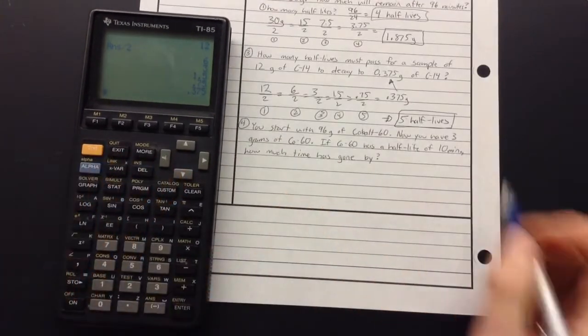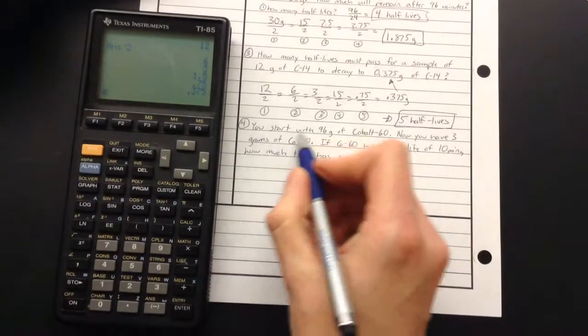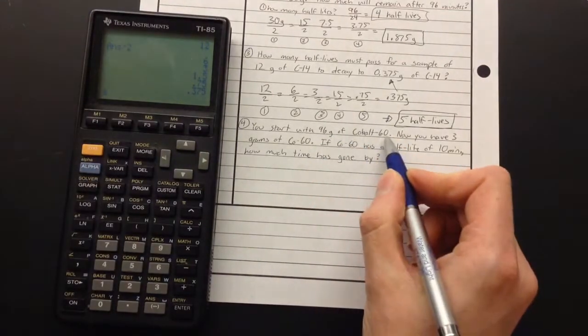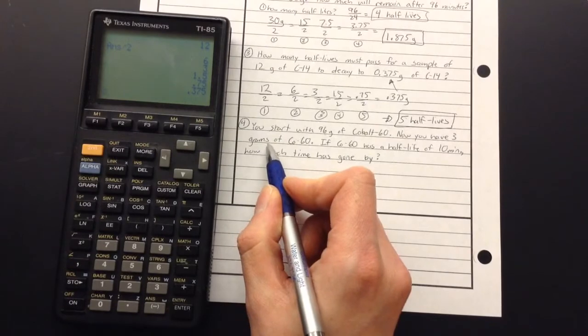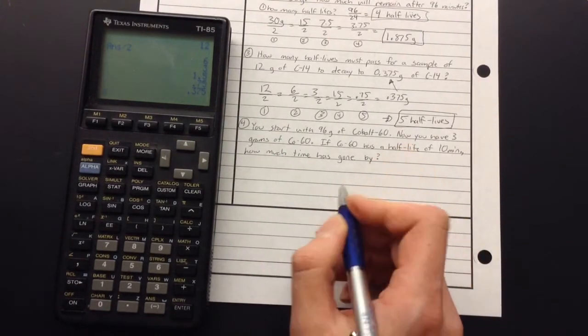All right, last one. So now, if I can figure out how many half-lives, I can figure out how much time has gone by. So let's say I start with 96 grams of cobalt-60, and now I only have 3 grams of cobalt-60. It has a half-life of 10 minutes, so I want to know how much time has gone by.